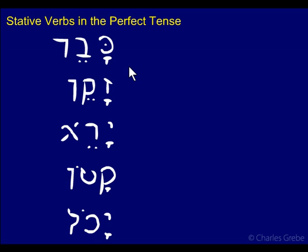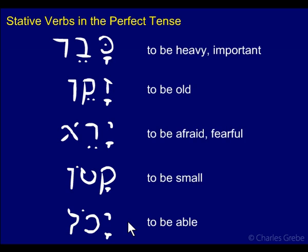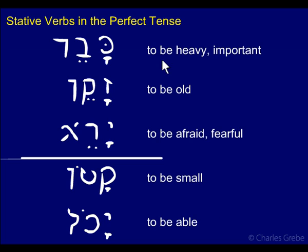Here's another set. KAVED means to be heavy or important. ZAKEN, to be old. YARAY, to be afraid or fearful. KATON, to be small. And YACHOL, to be able. We have both verb patterns here — KAVED and ZAKEN have the TZERE, while KATON and YACHOL have the HOLUM. These are all statives. In English it's easier to tell because we use 'to be' plus an adjective: heavy, old, fearful, small, able.